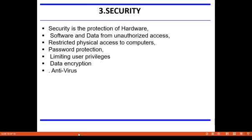The third network criterion is security — the protection of hardware, software, and data from unauthorized access. Common security methods include restricted physical access to computers, password protection, limiting user privileges, and data encryption. Anti-virus monitoring programs to defend against computer viruses are also a security measure. That completes the topic of network criteria. Thank you.